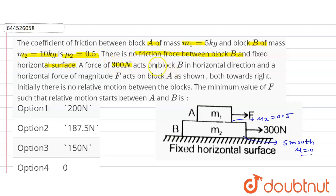A force of 300 newton acts on block B in horizontal direction and a horizontal force of magnitude F acts on block A.